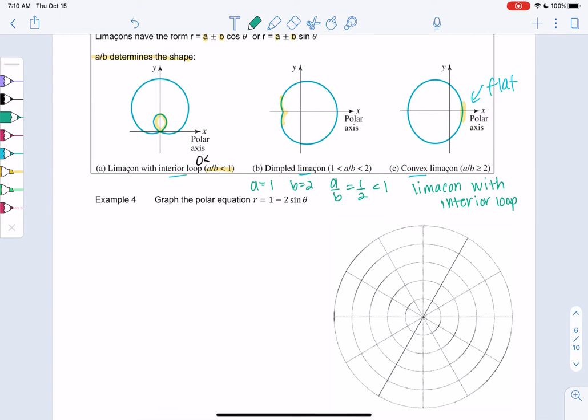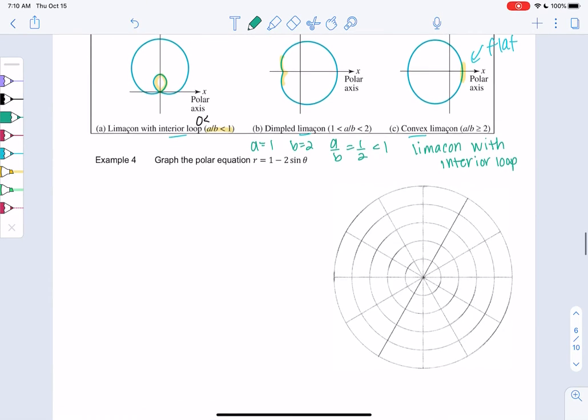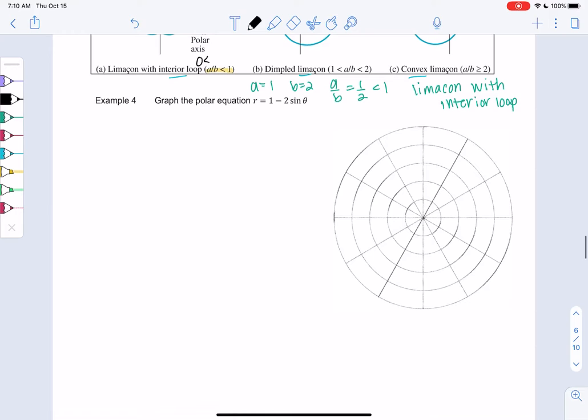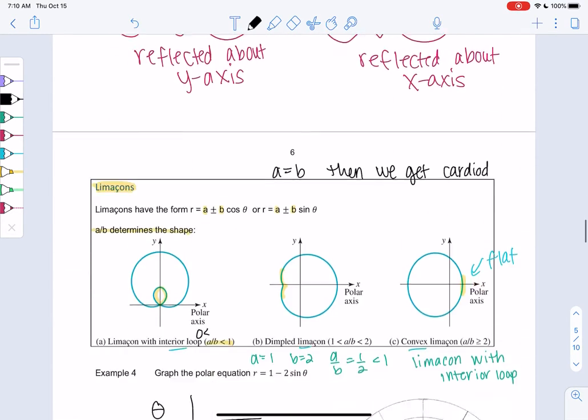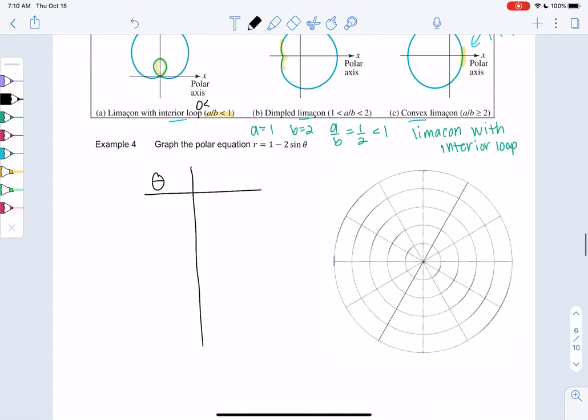And so it might be this direction. It might be a different direction. So let's plot a couple points and see if we can figure that out. So we'll make a table like last time. I'm going to do less points than last time because now we know the base shape. So last time I did a lot of points because we had no idea. But now that we know the basic shape, I think we can get away with less points. So I'm just going to do those easy points on the unit circle.